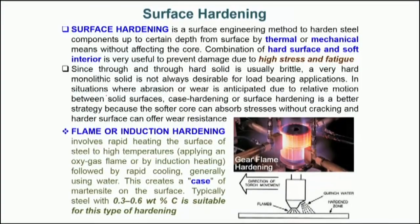Today we are going to discuss surface hardening, which is a thermally activated process with the same aim — to harden the surface. When we talk of surface hardening, all discussions are concerned with steel: the interstitial solid solution of carbon in alpha iron.